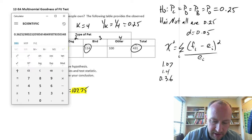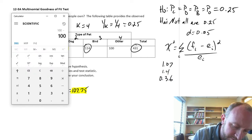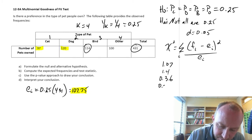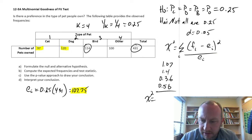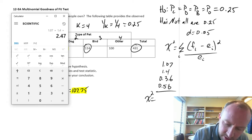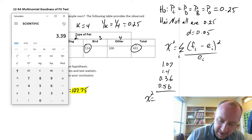And the next and last, 100 minus 107.75 squared, divided by 107.75, 0.56. There's all those individual values. Now we just need to add all of those up to get our test statistic. 1.07 plus 1.4 plus 0.36 and 0.56, and I have 3.39.